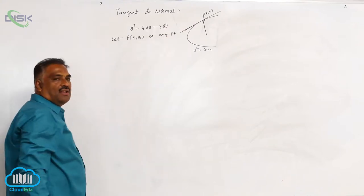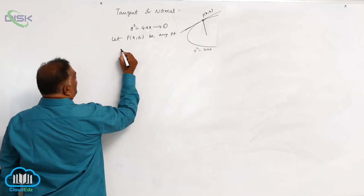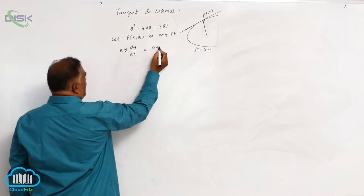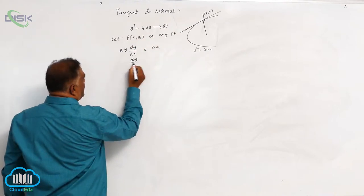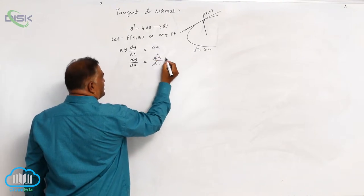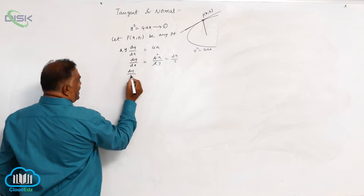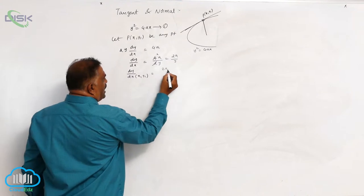From first year tangent normal, we want to find out the equation of tangent. Differentiate this equation: 2y into dy by dx is equal to 4a. So, dy by dx is equal to 4a divided by 2y, which is 2a by y. Therefore, dy by dx at x1 comma y1 is 2a by y1.